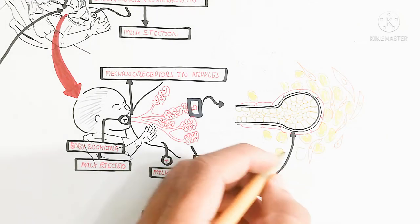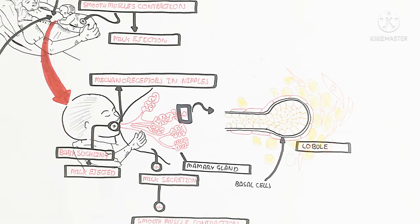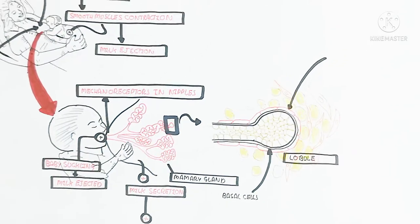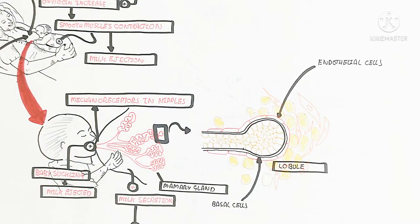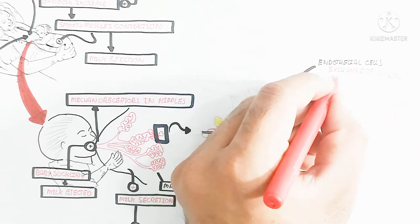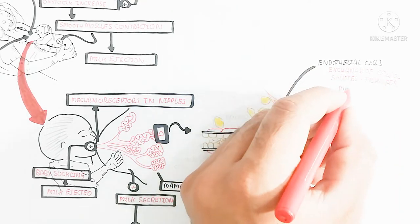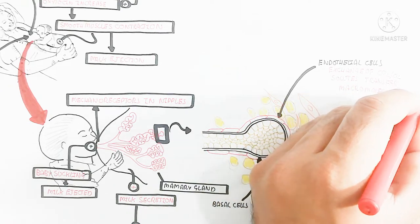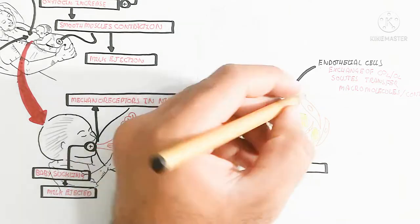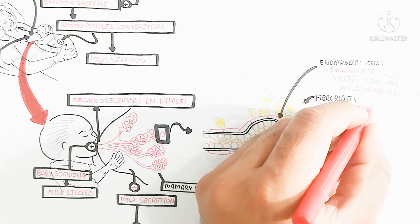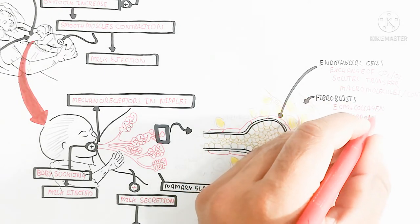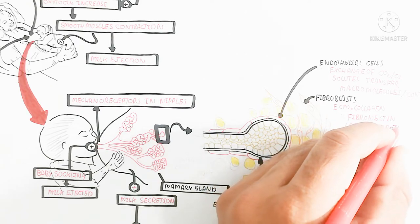The basal cell is on the inner side while the endothelial cell is on the upper side. Inside the basal cell is the luminal cell, which is used for milk secretion into the lobule. The endothelial cell is responsible for exchange of carbon dioxide and oxygen, solute and macromolecule transport, and contraction.